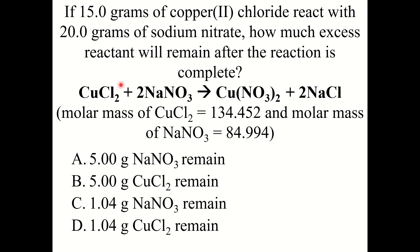Try this question: if 15 grams of copper chloride (CuCl2) react with 20 grams of sodium nitrate, how much excess reactant will remain after the reaction is complete? First figure out which is excess, then determine how much remains. The correct answer is C: 1.04 grams of sodium nitrate remain. Copper chloride was the limiting reactant; sodium nitrate was excess. The steps are exactly the same as the steps outlined in the previous problem.